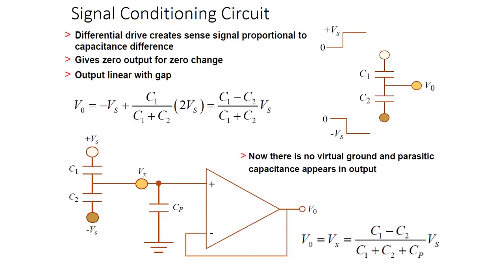This is the signal conditioning circuit. We mostly prefer the differential configuration because it avoids unnecessary effects and its performance is better with respect to the single capacitor configuration.